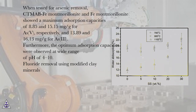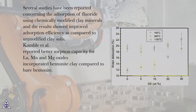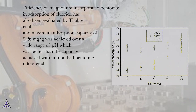Fluoride Removal Using Modified Clay Minerals. Several studies have been reported concerning the adsorption of fluoride using chemically modified clay minerals, and the results showed improved adsorption efficiency compared to unmodified clay. Campbell et al. reported better sorption capacity for La, Mn, and Mg oxides incorporated bentonite clay compared to bare bentonite. Efficiency of magnesium-incorporated bentonite in adsorption of fluoride was also evaluated by Takray et al., achieving a maximum adsorption capacity of 2.26 mg/g over a wide pH range, better than unmodified bentonite.